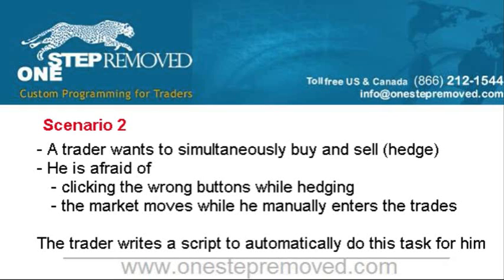Another example would be for a trader that likes to hedge immediately, where he wants to buy and sell at the same time. If a trader does that manually, that could take 10 or 15 seconds — he has to find the right price, double click, wait for the window to come up, push the correct button, buy or sell, wait for the confirmation window to come up, push okay, go back to the price, double click, then make sure to choose the opposite side so he doesn't make a mistake, push sell, push okay, and he's finally done. That whole process can take quite a while, and the risk is that the longer it takes, the more likely the price is to run away from him.